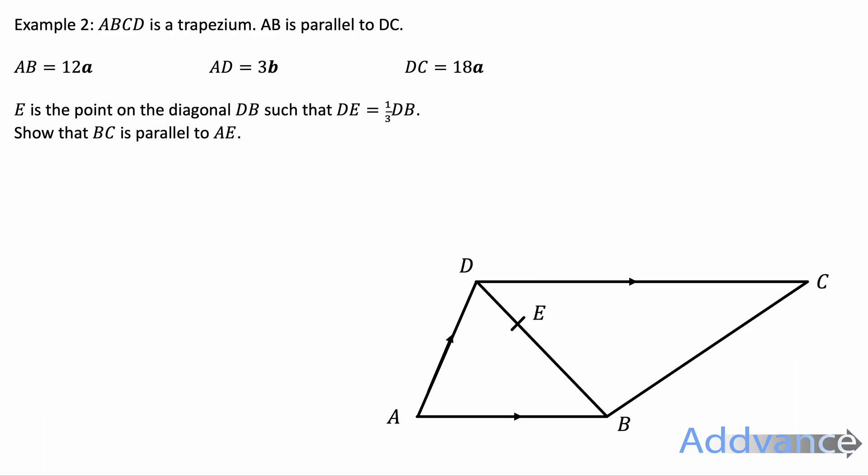Question two. We've got ABCD is a trapezium and AB is parallel to DC. The vector AB is 12a, the vector AD is 3b and the vector DC is 18a. E is the point on the diagonal DB such that DE is a third of DB. Show that BC is parallel to AE. And all we need to do to show that two vectors are parallel is show that they are scalar multiples of each other.